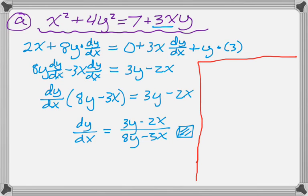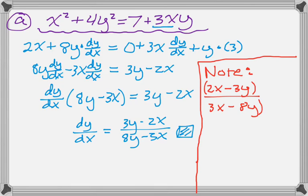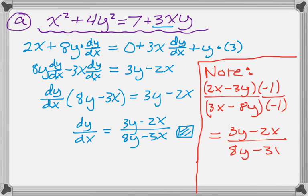But I do want to point out that you may have done it slightly differently. If you move things to different sides than what I had moved them to, you might have ended up with this. So 2x minus 3y over 3x minus 8y. And then you still have to show that it's equal to the thing they tell you to say it's equal to. So you can accomplish that by multiplying the numerator and the denominator by negative 1. And then when you distribute, you end up exactly where we need to be. So that's not a problem. It doesn't mean you did it wrong. It just means you got something a little different.